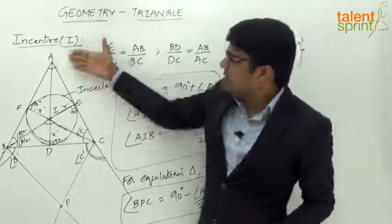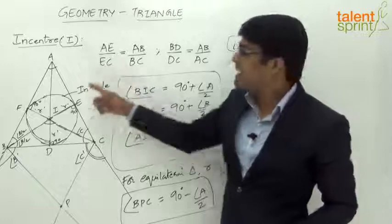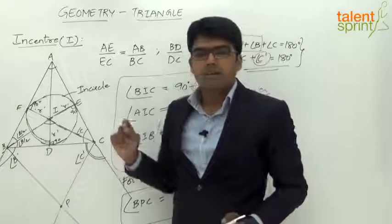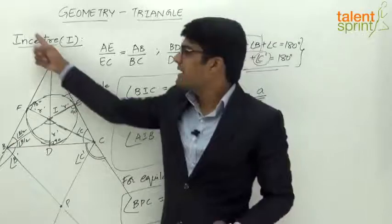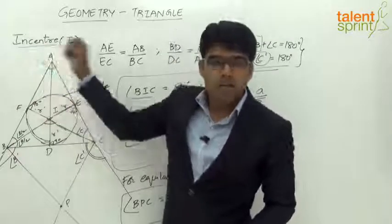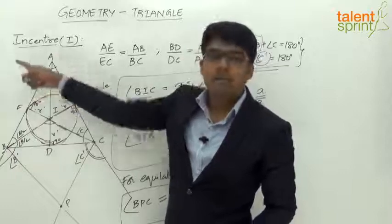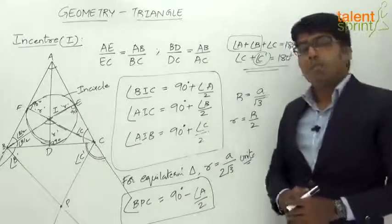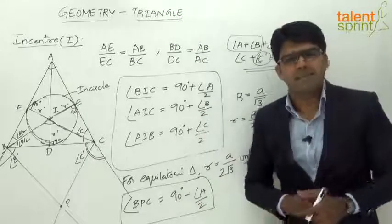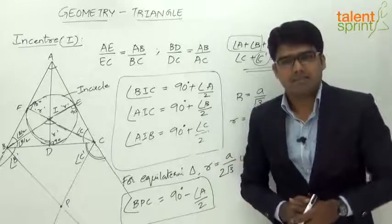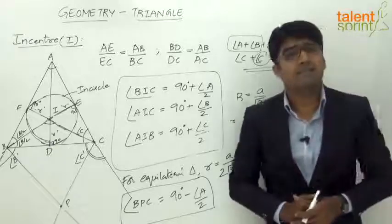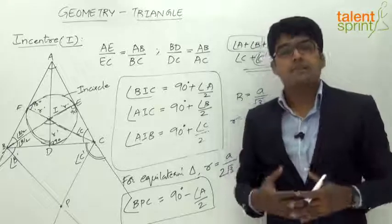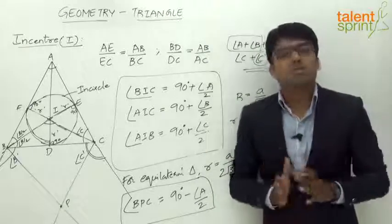Similarly, if exterior angle bisectors at A and C meet at P, angle APC = 90° − B/2. And if exterior angle bisectors at A and B meet at P, angle APB = 90° − C/2. This is a special property related to exterior angle bisectors. Make sure to remember all the properties of the different centers — incenter, circumcenter, orthocenter — so that questions based on them can be answered easily.